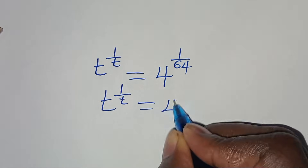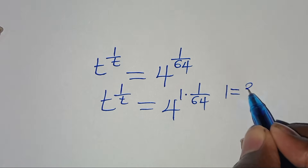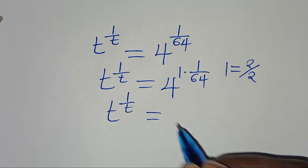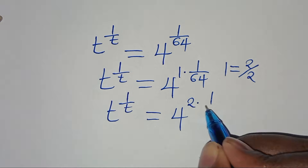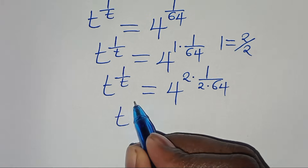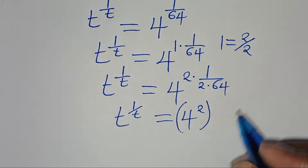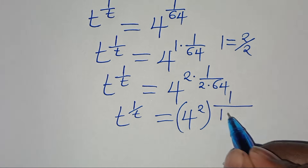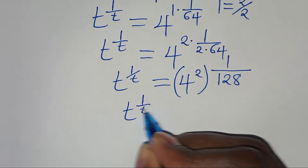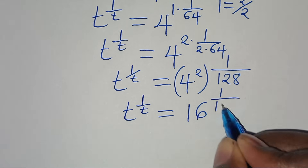So t to the power of 1 over t equals 4 to the power of 2 multiplied by 1 over 2 times 64. This gives us 4 squared, which is 16, raised to the power of 1 over 128.